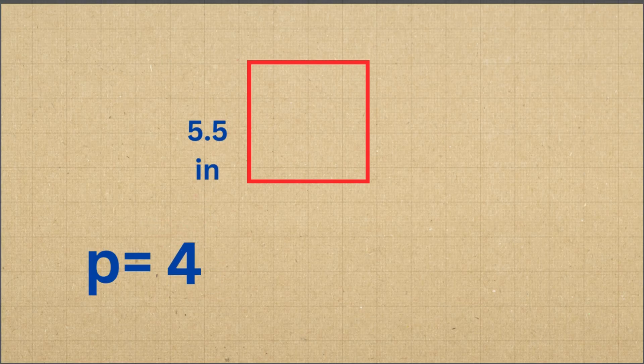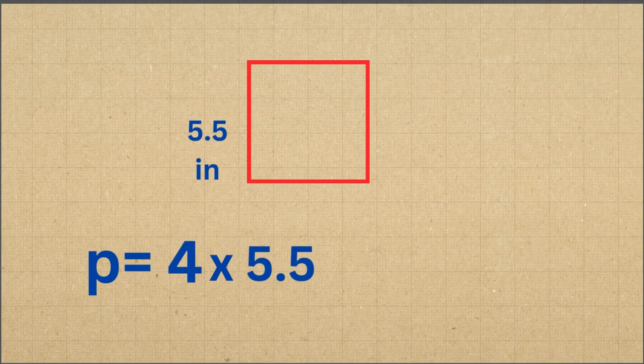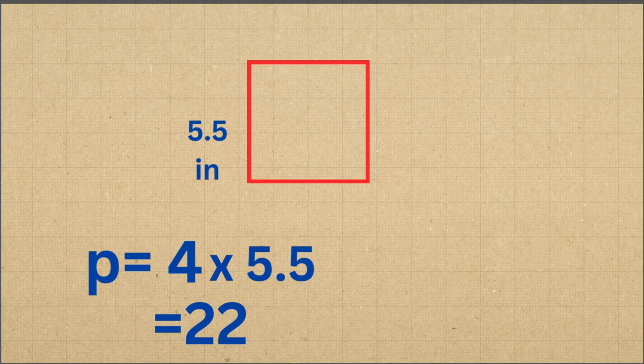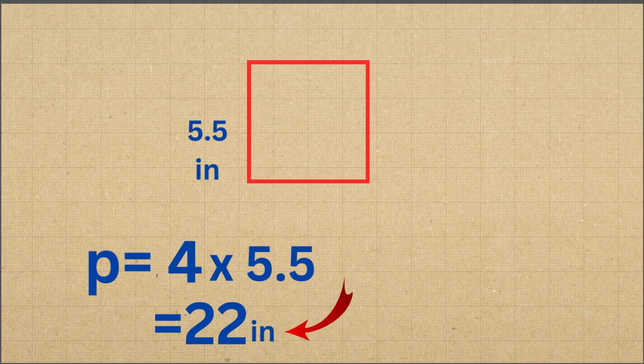First, we multiply 4 by 5 and a half. 4 times 5 and a half equals 22. So the perimeter of the square is 22 inches. Always remember to include the unit, which in this case is inches.